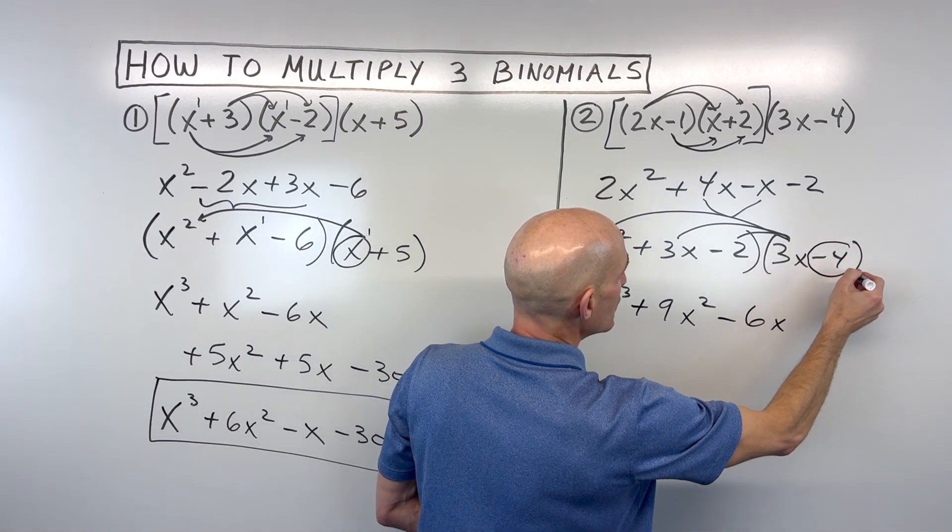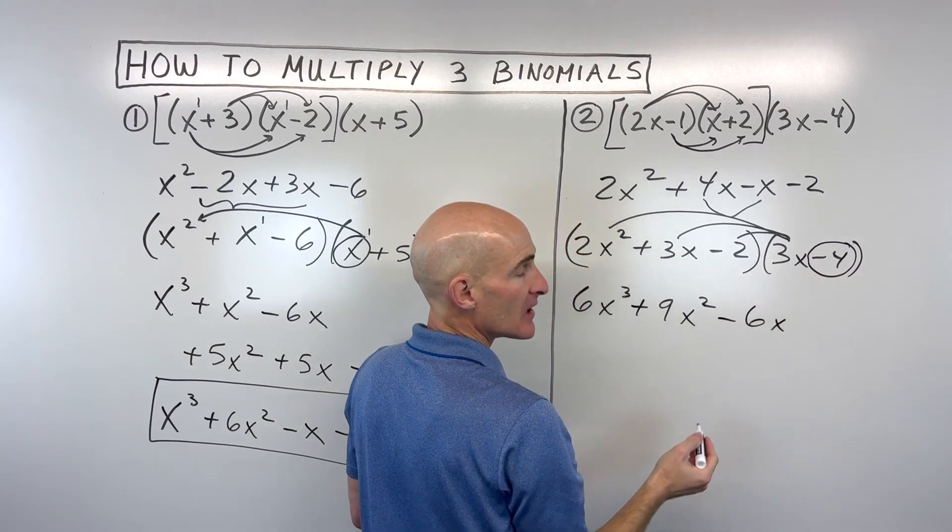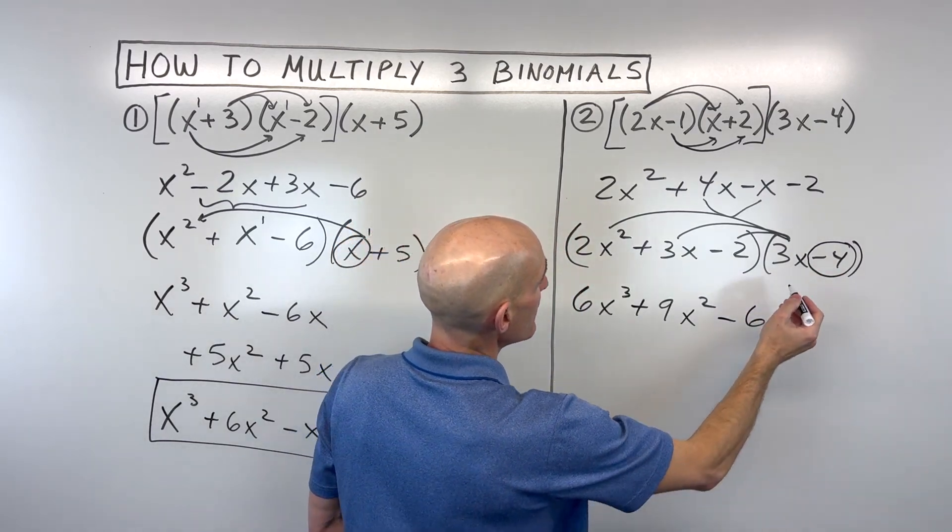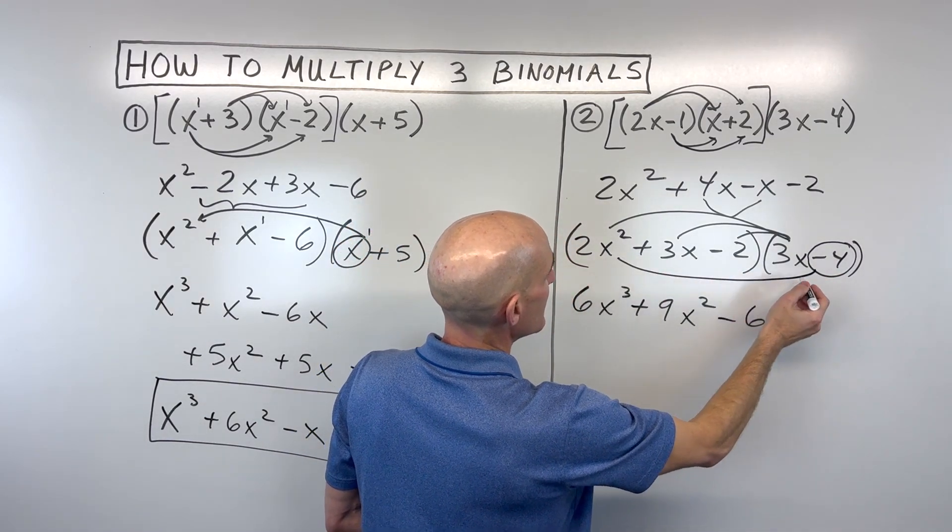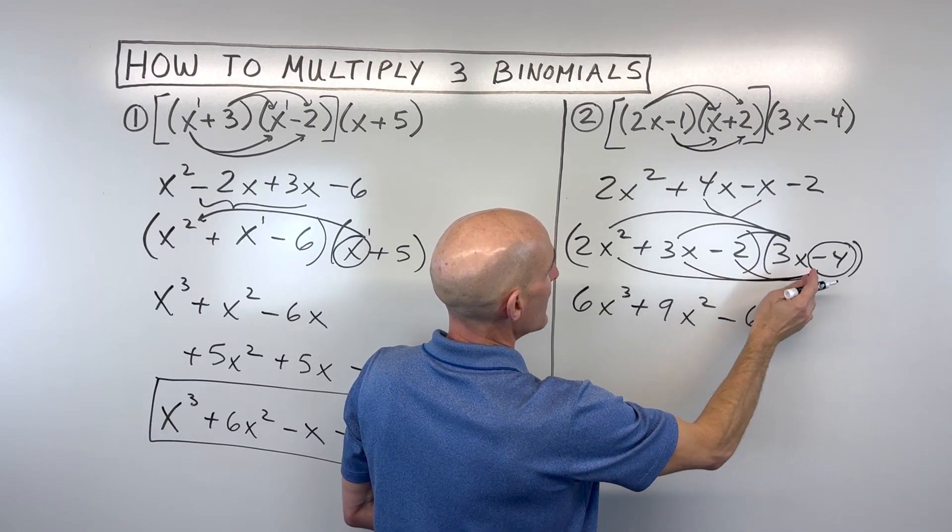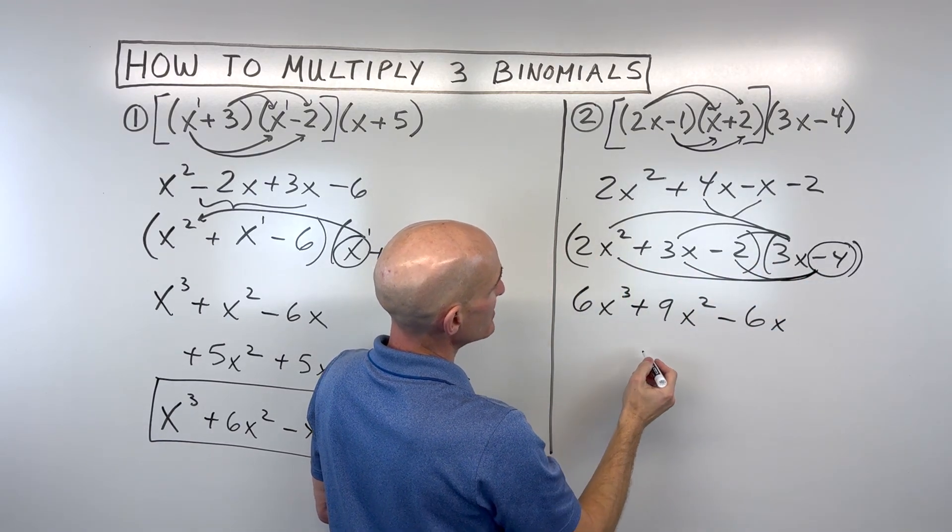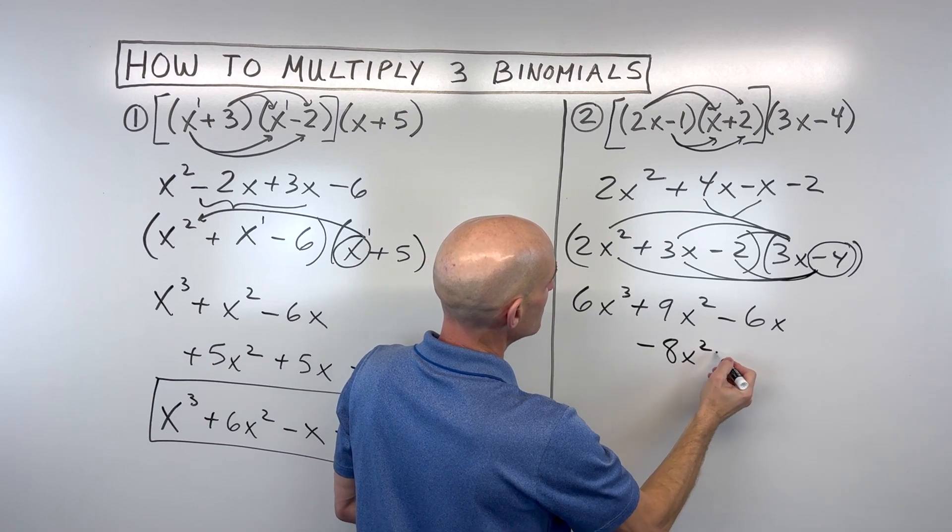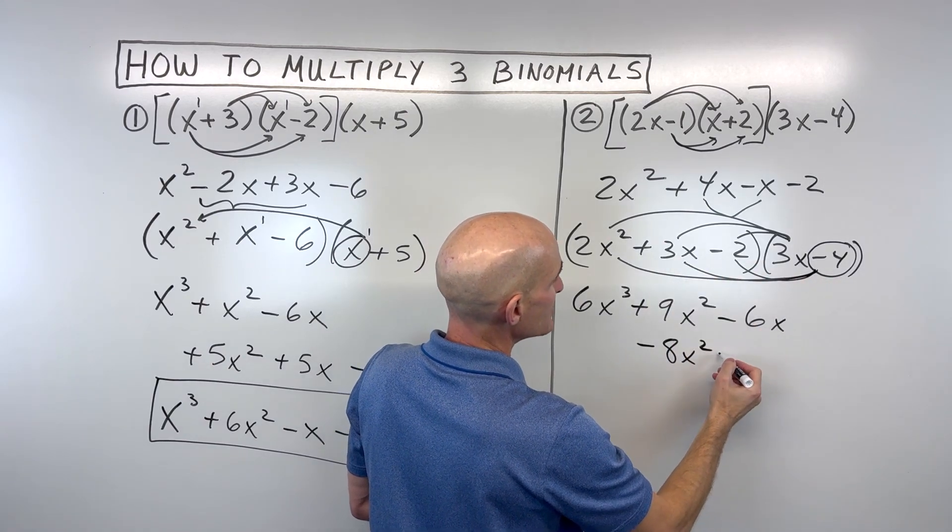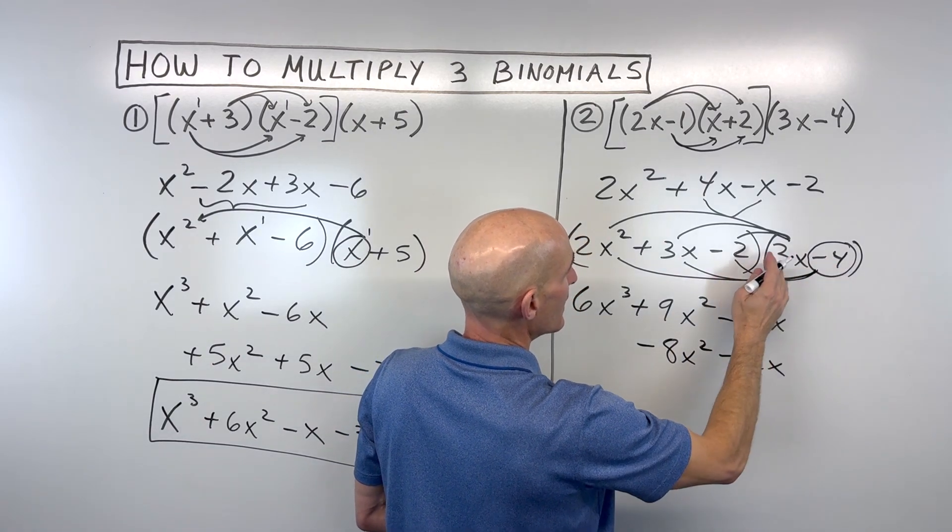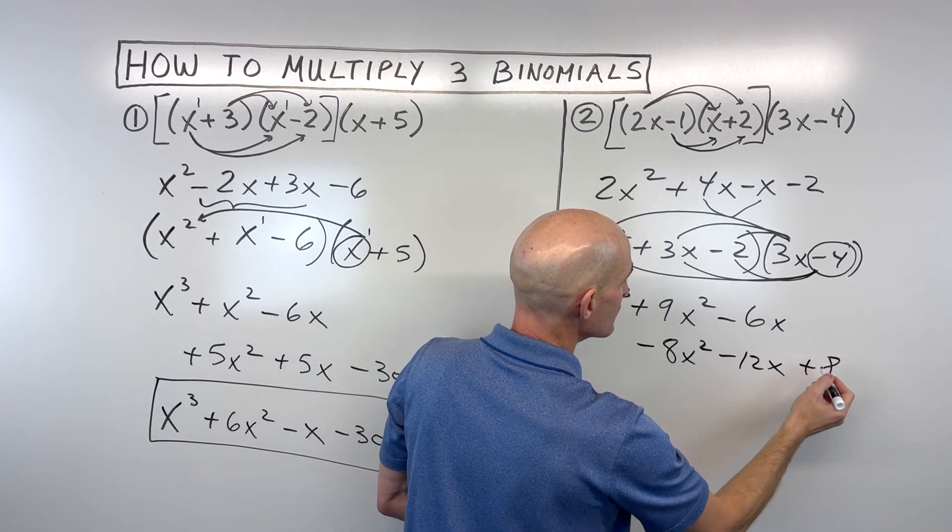And then now we're going to take this negative 4. Again, make sure you capture whether it's positive or negative. And we're going to take negative 4 times all three of these terms. Negative 4 times 2x squared is negative 8x squared. Negative 4 times 3x is negative 12x. And negative 4 times negative 2 is positive 8.